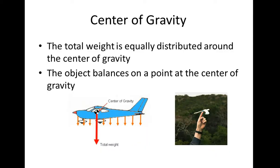The center of gravity: if you think of the total weight of an object being equally distributed around one point, that point is the center of gravity. If you take an object and put a pencil or your finger under that point, the object will balance completely at that one point.